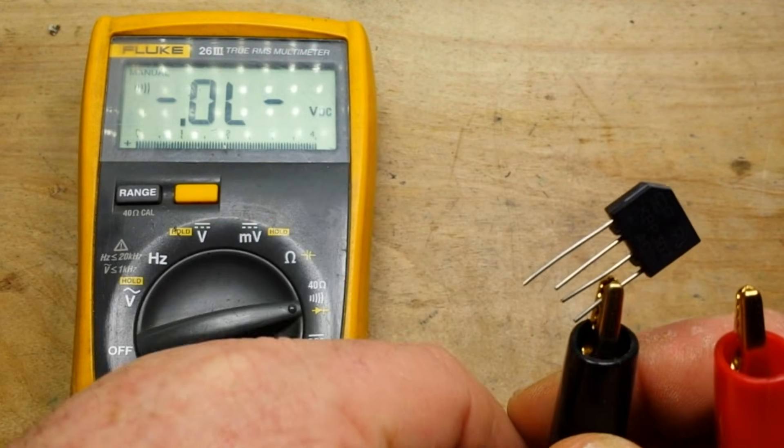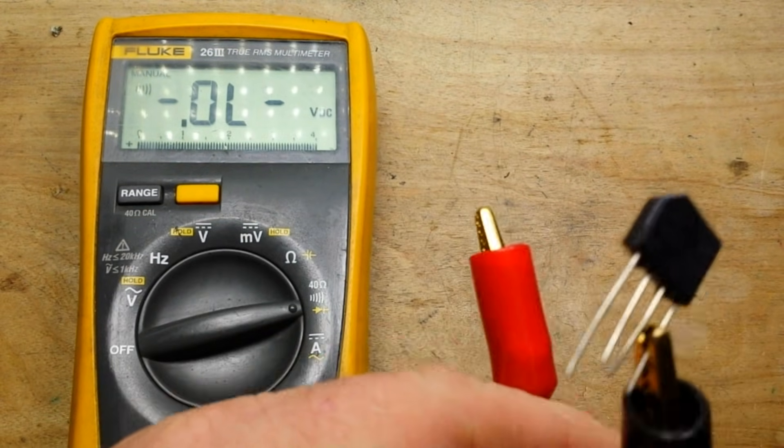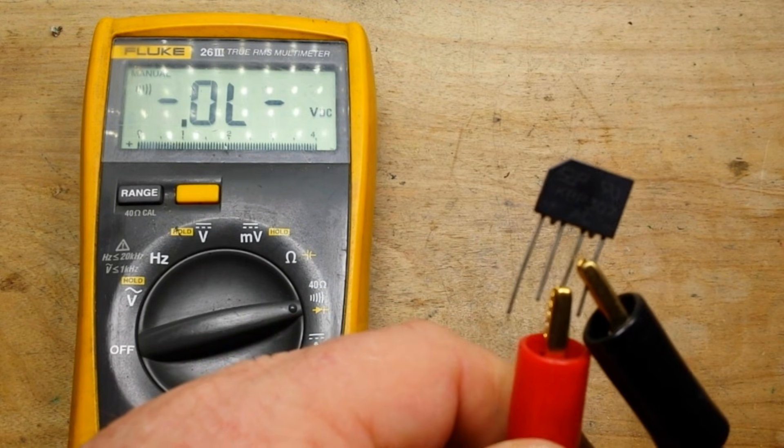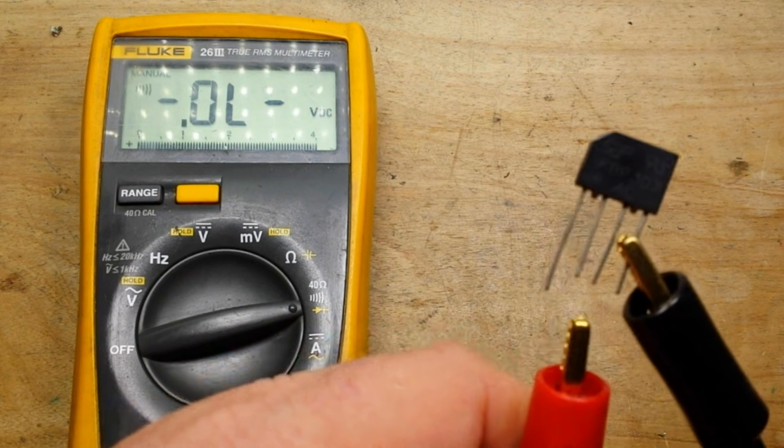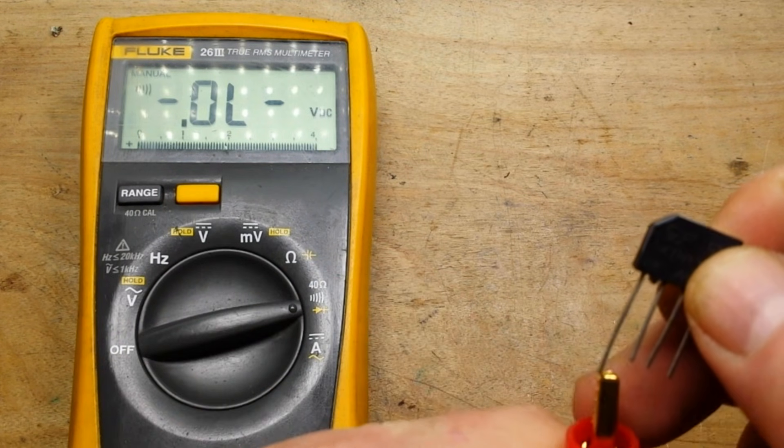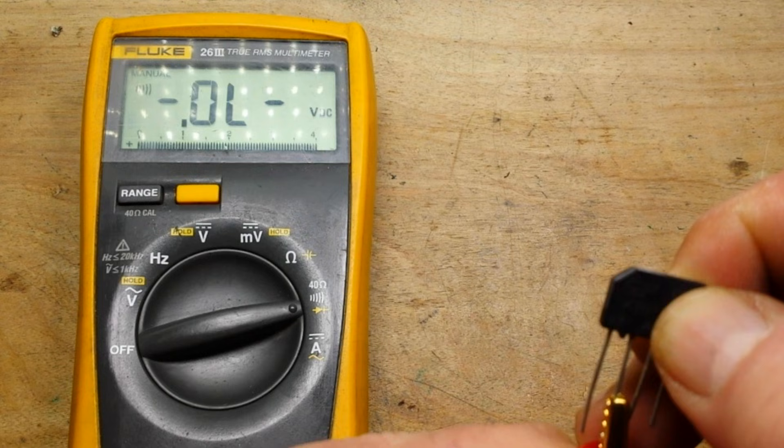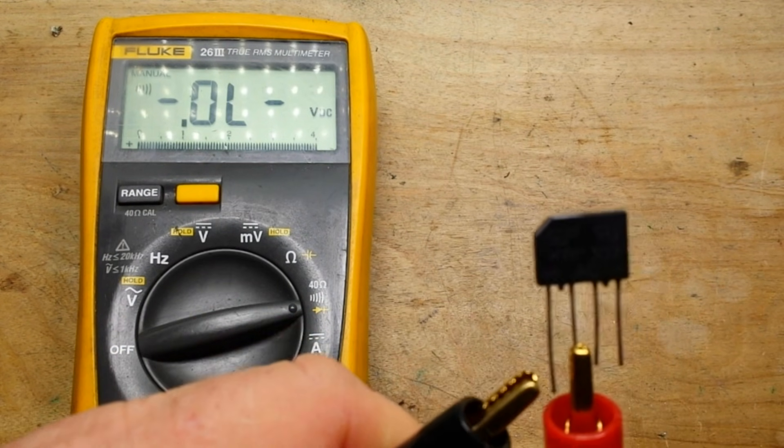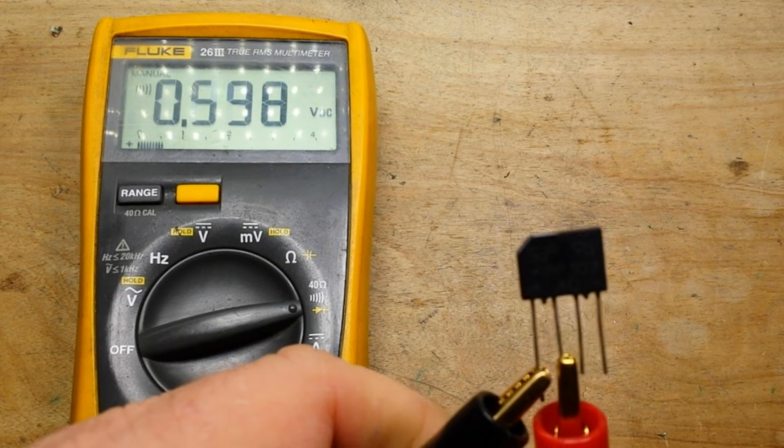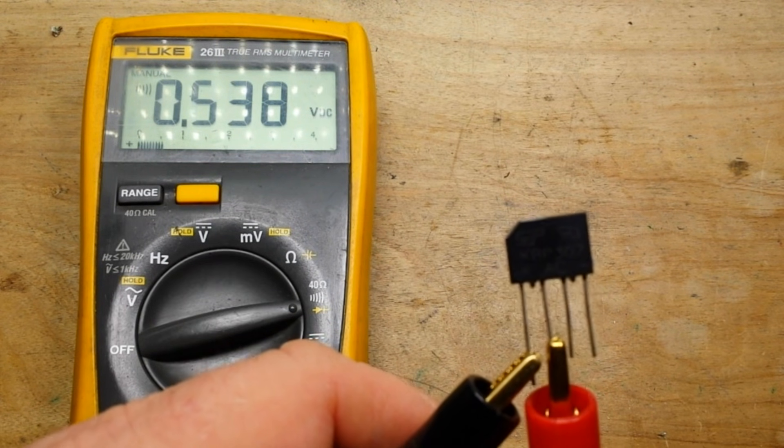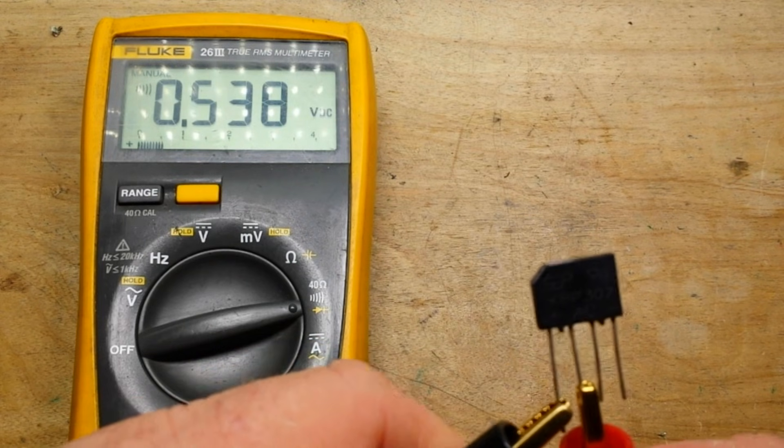Reverse them, and we should have absolutely nothing, just like that. Next we're going to put our positive on the other AC and our negative on the positive, and we have another voltage drop or another diode drop. If we reverse them, we get nothing.